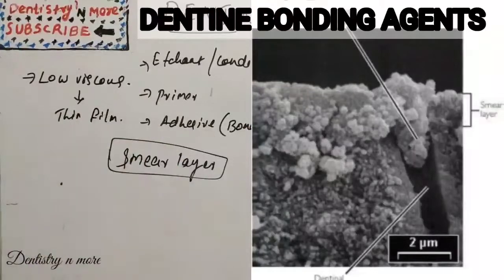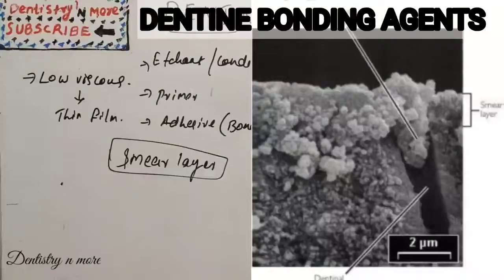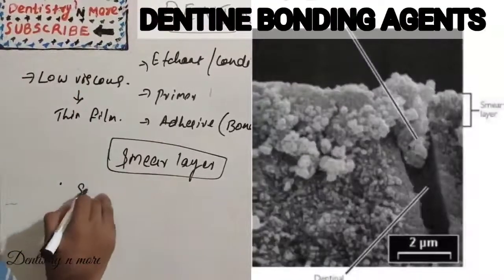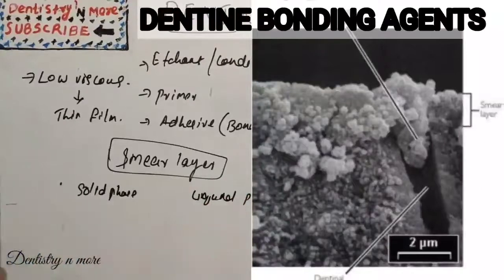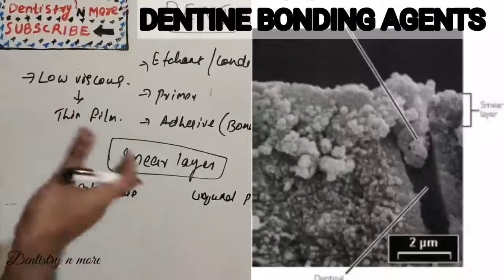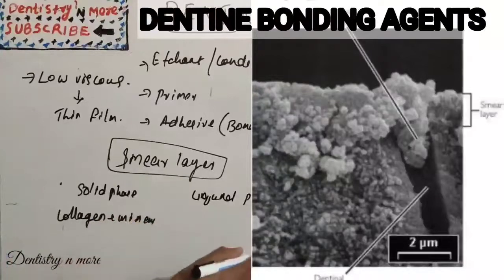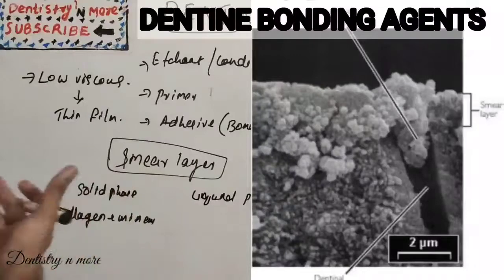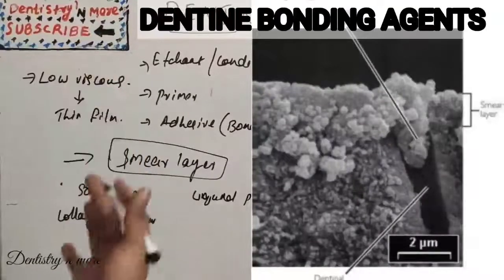We need to remove the smear layer for proper bonding to happen. The smear layer has two phases: a solid phase and a liquid phase. The solid phase is made up of cutting debris from the tooth cutting process, consisting mainly of denatured collagen and minerals. The liquid phase is made up of the fluid-filled channels around the cutting debris. Bacteria entrapped in the smear layer can survive and multiply beneath the restoration.